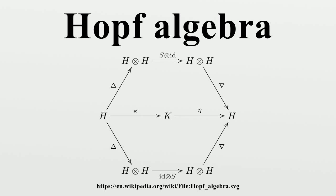Similarly, a Hopf subalgebra A is left-normal in H if it is stable under the left-adjoint mapping defined by ad_L equals h·a·S. The two conditions of normality are equivalent if the antipode S is bijective, in which case A is said to be a normal Hopf subalgebra. A normal Hopf subalgebra A in H satisfies the condition H·A⁺ = A⁺·H, where A⁺ denotes the kernel of the counit on K. This normality condition implies that H·A⁺ is a Hopf ideal of H, yielding a quotient Hopf algebra H/H·A⁺, a theory analogous to that of normal subgroups and quotient groups.